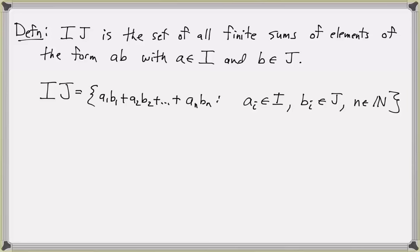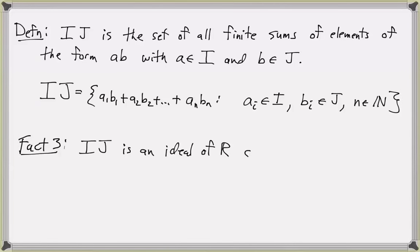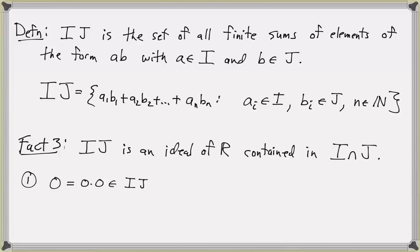Fact three: IJ is an ideal of R and, further, IJ is contained in I ∩ J. First, IJ is non-empty because 0 = 0·0, and 0 is in both I and J, so 0 is an element of IJ.